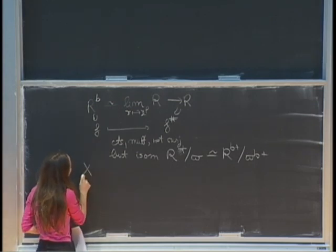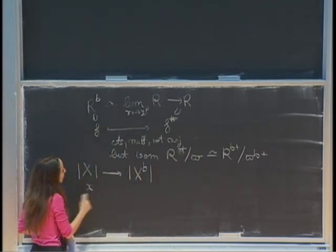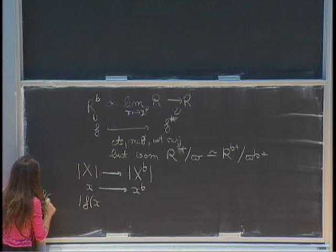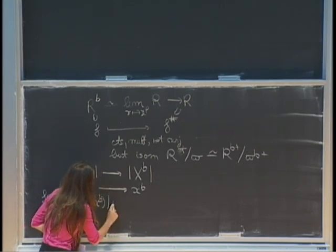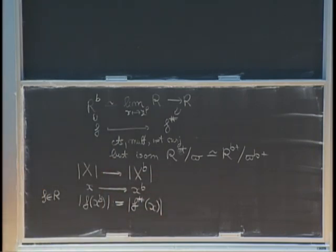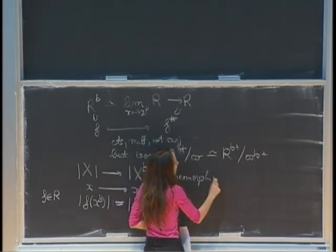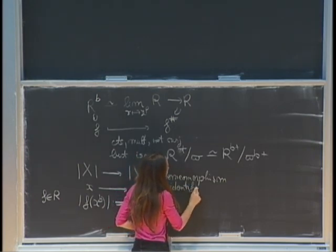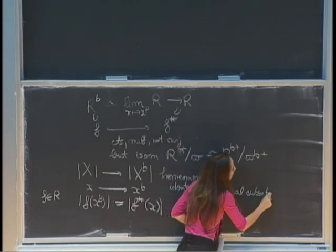This allows us to compare topological spaces. We can define a map from x to x-flat that sends a point of this space to the point defined by: for any f locally in R, f of x-flat is defined to be f-sharp of x. This is a map of topological spaces, and one can prove it's a homeomorphism. It also identifies rational subsets.